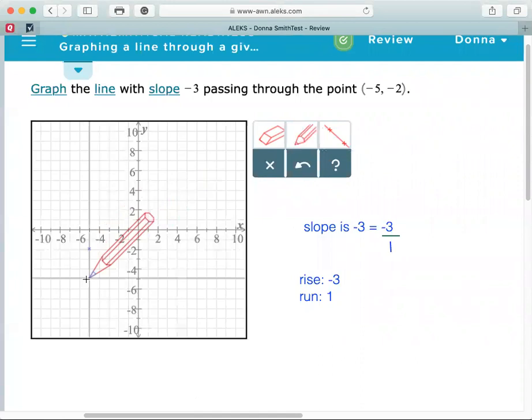And also, rise rhymes with Y, the Y axis. So you know that's going to be your Y direction movement. So it's negative 3, so we're going down 3. Then the run is 1. Since it's a positive 1, we're going to move to the right 1. So that gives us our second point.